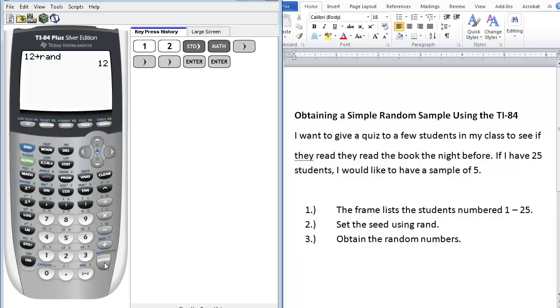Now we are going to use the random integer. We go back to math, back to the PRB menu, and we want option number 5 for random integer. You can always press the number 5, or you can scroll down and press enter.